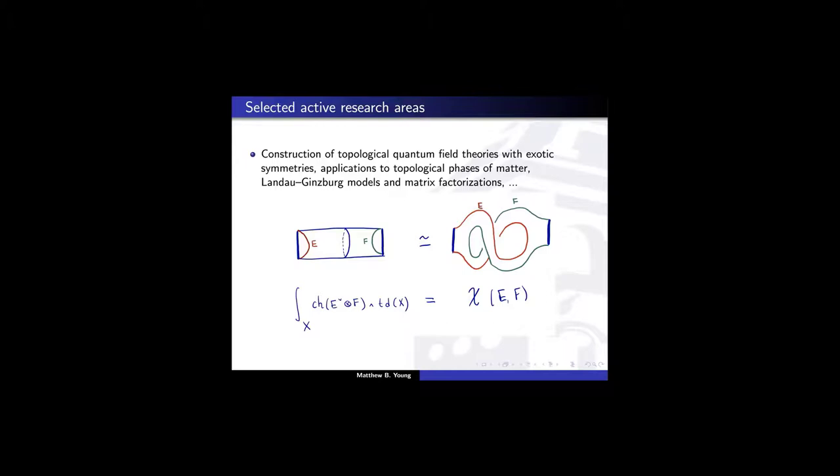The diagram here illustrates on the top a topological isomorphism which when translated using the language of quantum field theory corresponds to the algebraic inequality below. So this is an example of using topology and geometry to learn something about algebra.